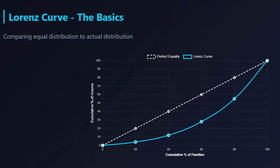Let's break down how it actually works. The magic really starts when you imagine a perfectly equal world. To do that, we draw a straight 45-degree line. This represents the ideal, where 10% of the population holds exactly 10% of the income, 50% holds 50%, and so on. But of course, reality is never that neat. When we plot the actual data, a very different picture emerges — and that's what shows us the true shape of inequality.